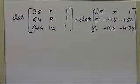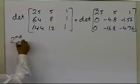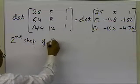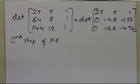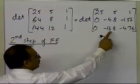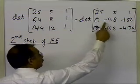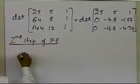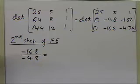I haven't yet achieved the upper triangular matrix, because I need to do a second step of forward elimination. For an n×n matrix you need n minus 1 steps — so a 10×10 matrix would require nine steps. In step 2, I want to zero out the minus 16.8 in row 3, column 2. I divide minus 16.8 by minus 4.8, which gives 3.5.